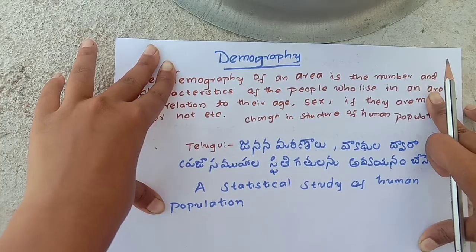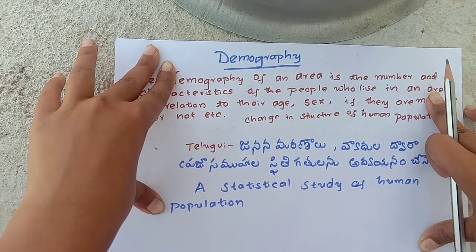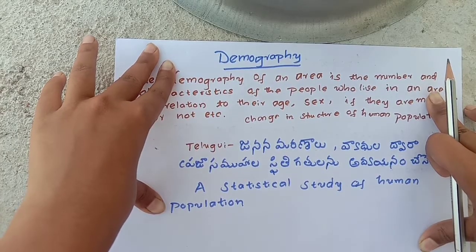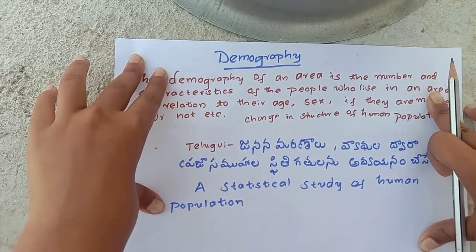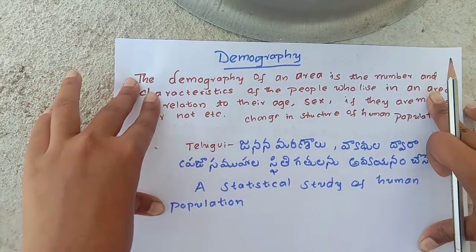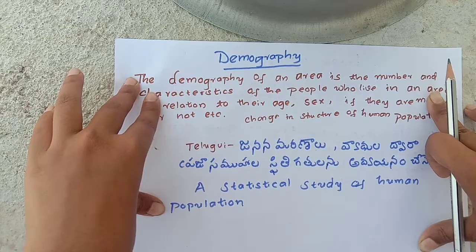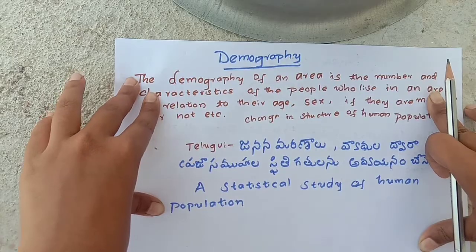For example, whether people are married or not married — these are the kinds of characteristics studied in demography.